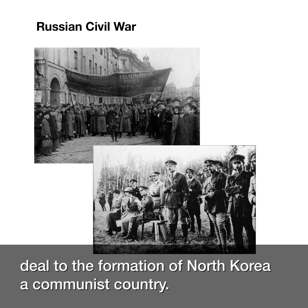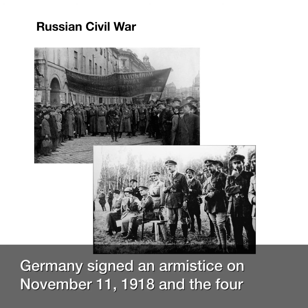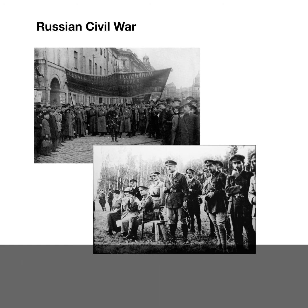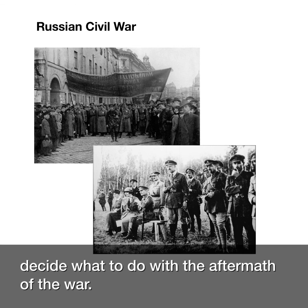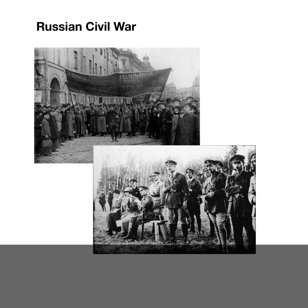Germany signed an armistice on November 11, 1918, and the four major powers — Great Britain, France, America, and Italy — met in Paris to decide what to do in the aftermath of the war.